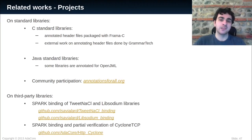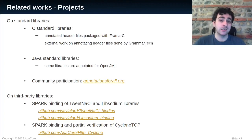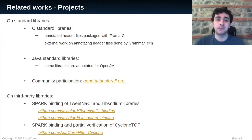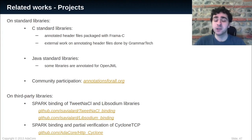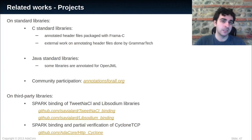Standard libraries are not the only libraries that can be used in Spark code. Third-party libraries might be used as well, and users will face the same problems as with standard libraries if they are not annotated. One of the projects at AdaCore was to provide a Spark binding of two cryptography libraries, TweetNaCl and Libsodium. The Spark binding consists in binding the C functions from the original libraries, but taking advantage of contract-based programming in Ada to ensure the correct usage of the libraries and also to prove user code. Another project was the Spark binding of CycloneTCP, an implementation of a TCP/IP stack in C. A similar work has been done for this library, but some parts were entirely rewritten in Spark in order to verify them, adding even more reliability.